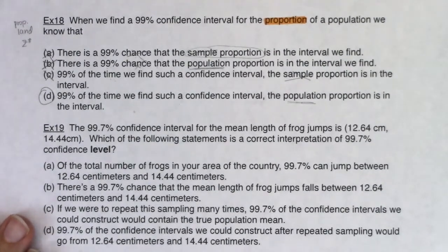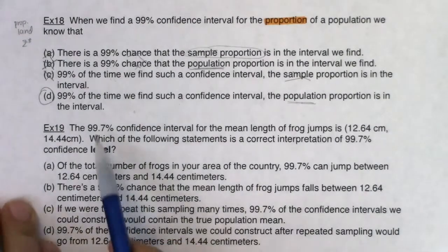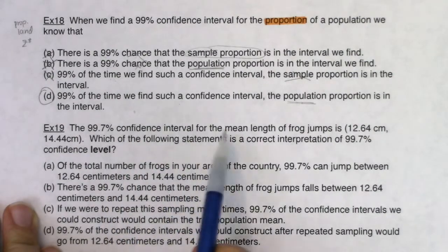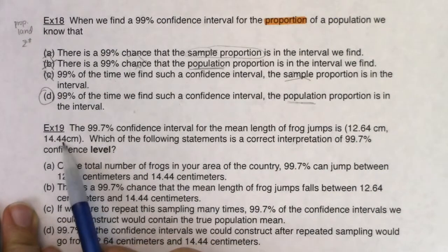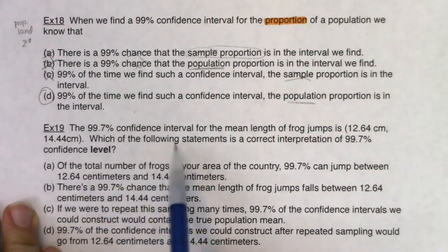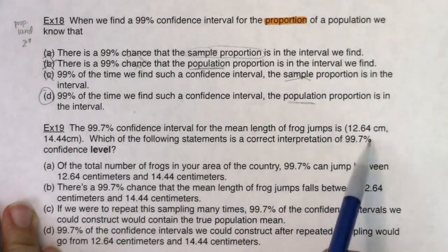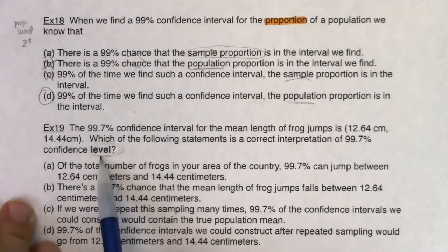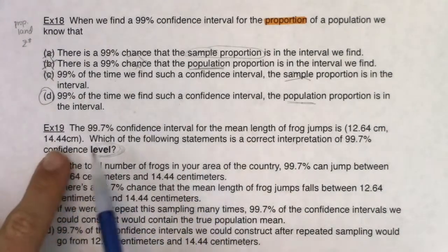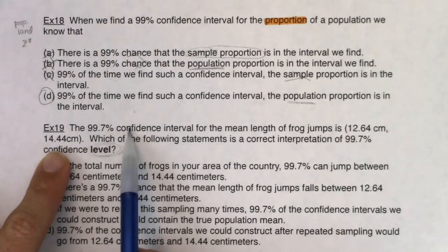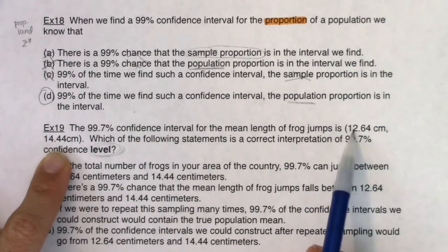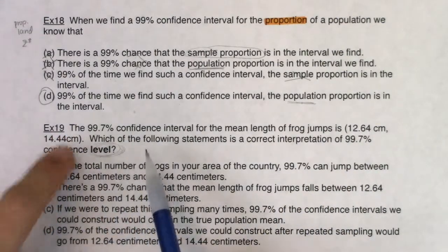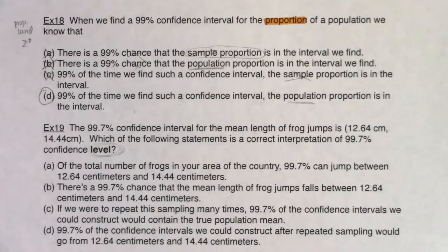Let's take a look at Example 19 and see if we can spot the correct answer. The 99.7% confidence interval for the mean length of frog jumps is 12.64 centimeters to 14.44 centimeters. Which of the following statements is a correct interpretation of the level? The interval interpretation would be: we are 99.7% confident that mu, the true average frog jump length, is between 12.64 centimeters and 14.44 centimeters. But they're asking for the level interpretation.